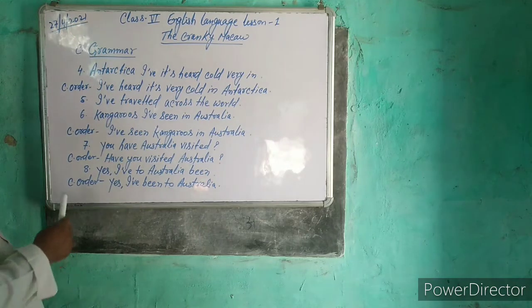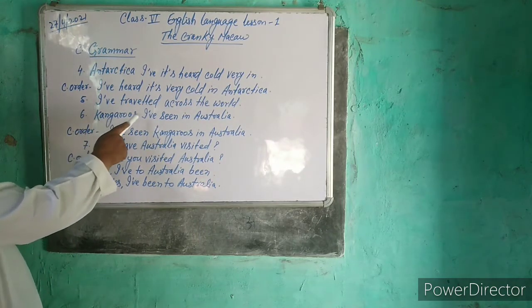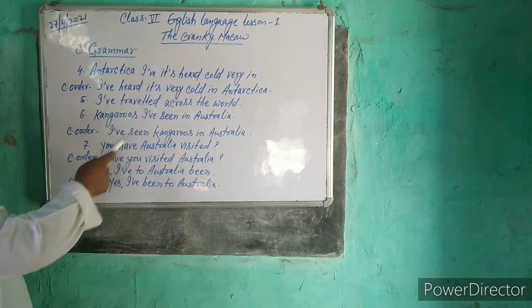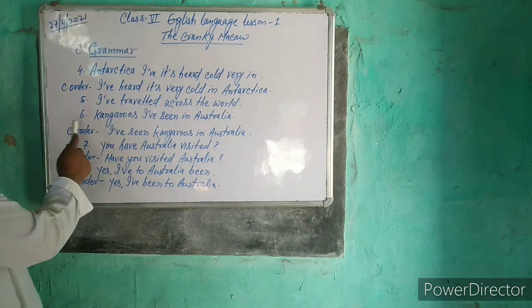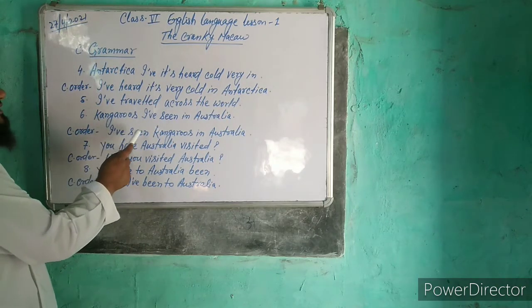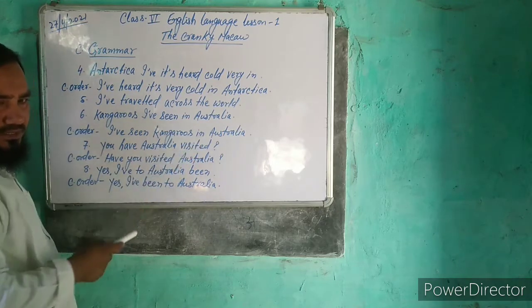Now see the sixth sentence. The correct order is: I have seen kangaroos in Australia.